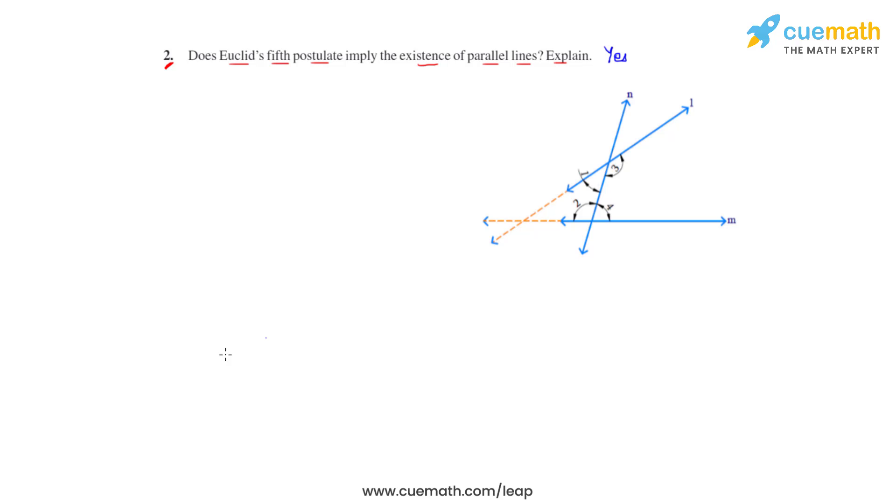Then we have a case where angle 3 plus angle 4 will be greater than 180 degrees, and on the other side, the sum of angle 1 plus angle 2 will be less than 180 degrees.